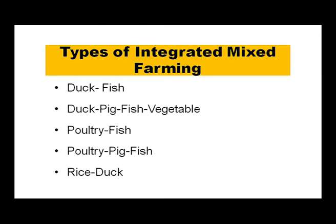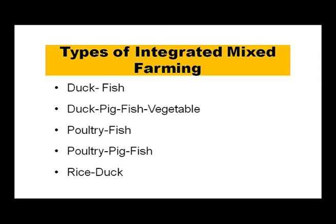Types of integrated mixed farming include: duck-fish, duck-pig-fish-vegetable, poultry-fish, poultry-pig-fish-rice, and duck-rice, among many others. Duck-fish mixed farming is most common; ducks make a safe environment for fish by consuming frogs, tadpoles, and other organisms. About 300 ducks are sufficient to fertilize one hectare of water spread, and ducks are considered live manuring machines of fish ponds.